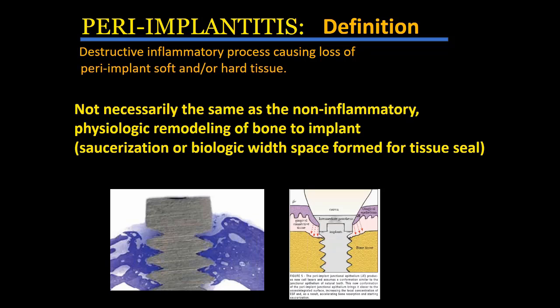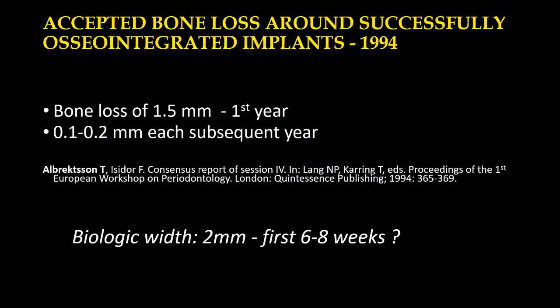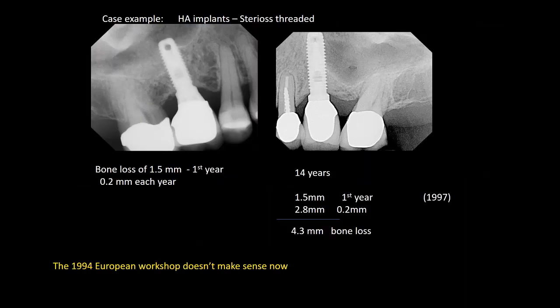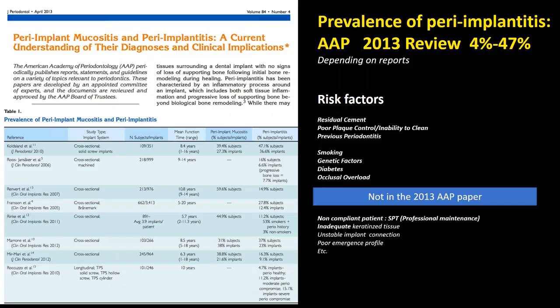Peri-implantitis should not be confused with saucerization or the formation of biologic width around implants, which is normal remodeling. The big question is how much bone loss is normal. A European workshop on periodontology in 1994 stated that initial bone loss of 1.5 mm in the first year is normal, and 0.1 to 0.2 mm each subsequent year is expected. But using those calculations, an implant I placed 14 years ago should have 4.3 mm of bone loss — which shows that old view is no longer valid.